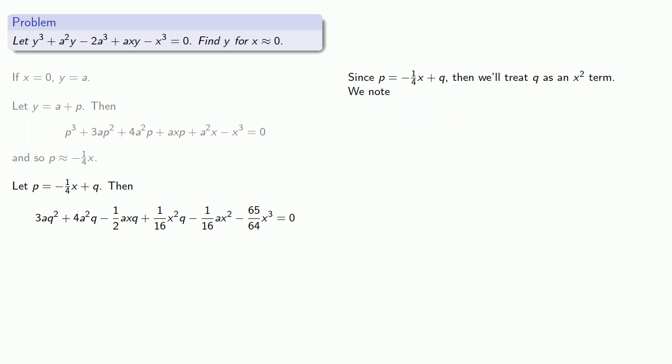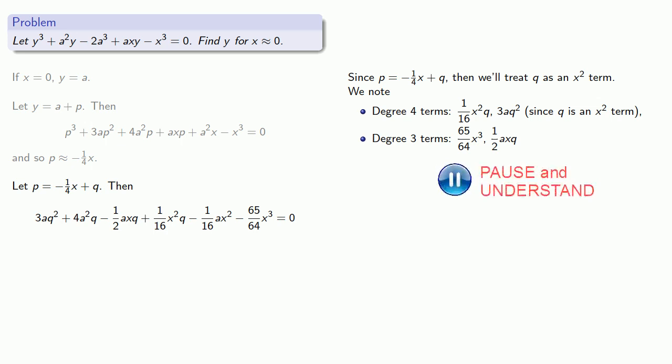And so we note the degrees of the terms in our equation. The degree 4 terms, 1 16th x squared q and 3aq squared. And again, this is since q is an x squared term. Our degree 3 terms, 65 64ths x cubed and 1 half axq. Again, treating q as an x squared term. This is an x times an x squared. And our degree 2 terms, 1 16th ax squared and 4a squared q. So taking our least degree terms, our equation is approximately 4a squared q minus 1 16th ax squared. And that gives us q as approximately.